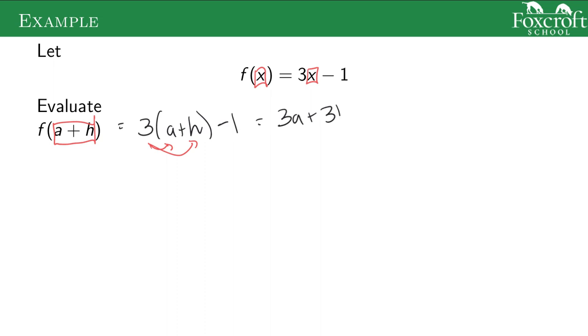This gives us 3a + 3h - 1, and then you're done because you can't combine anything after this. This is something that comes up in pre-calc and calculus—remembering that even if it's not a number, whatever's in parentheses goes in for that x.